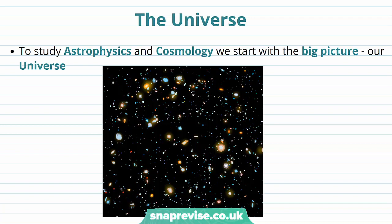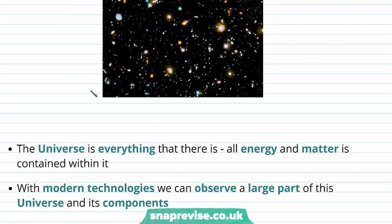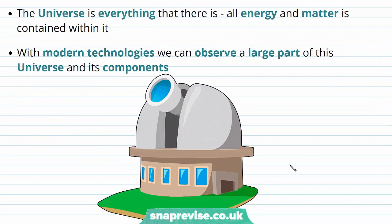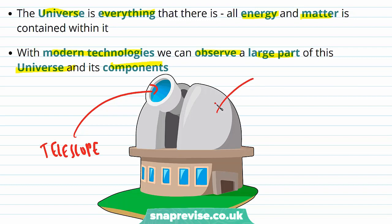Before we start talking about the different components of the universe, we first need to define what the universe actually is. When we study astrophysics and cosmology, we start with the big picture: our universe. Quite simply, the universe is everything that there is — all energy and matter is contained within it. With modern technologies, we can observe a large part of this universe and its components, for example using a telescope housed inside an observatory.